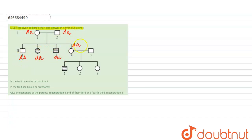Both parents are going to be heterozygous for the trait. The affected child will be small a small a, while the parents are capital A capital A or capital A small a — they may be homozygous or heterozygous. Since it appears to be a dominant trait, it may be heterozygous or homozygous.